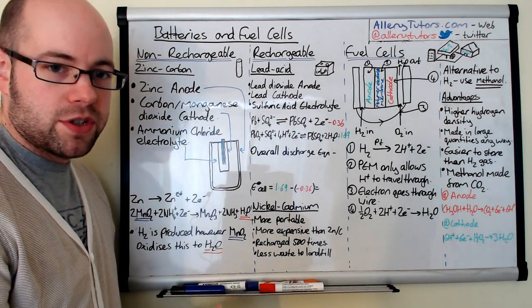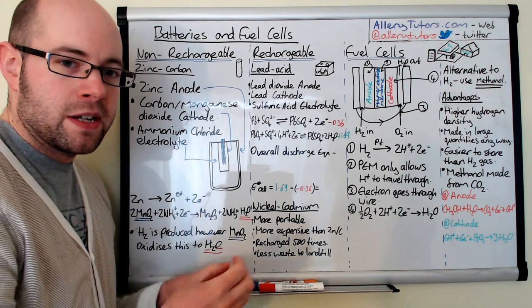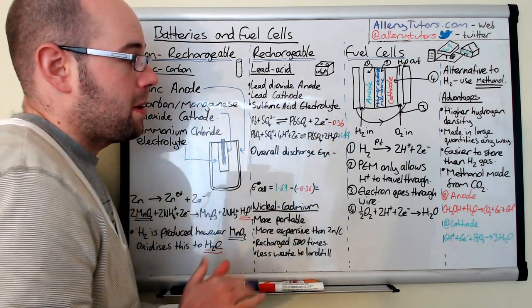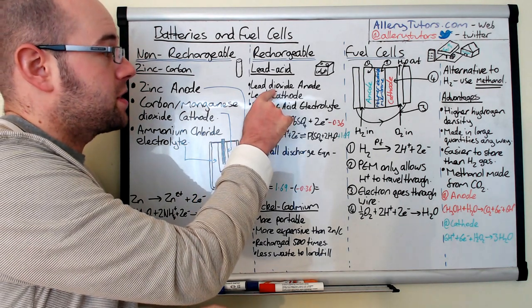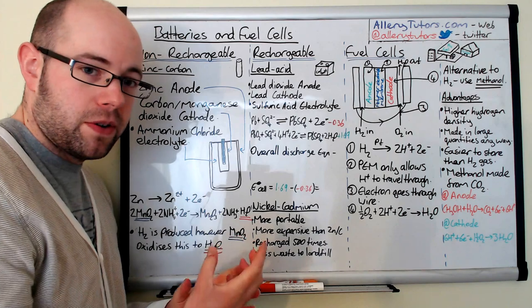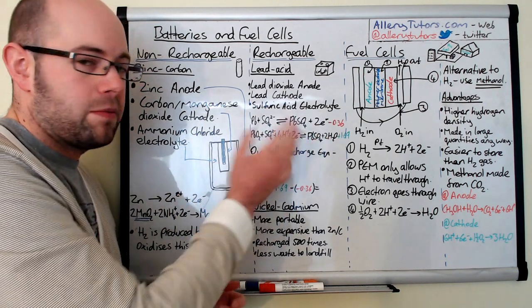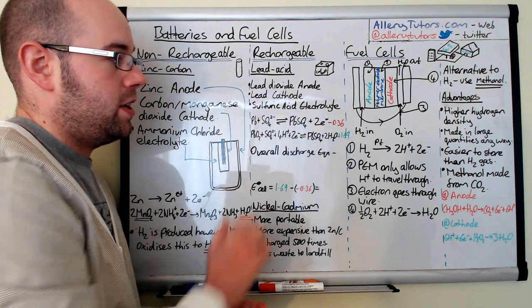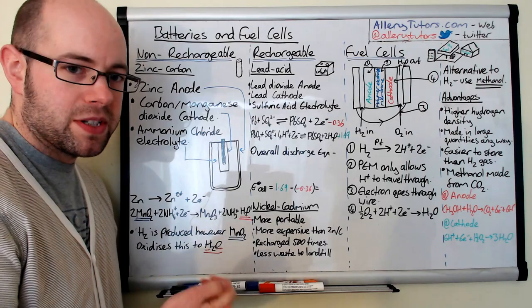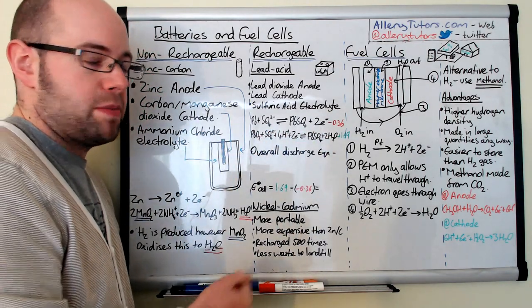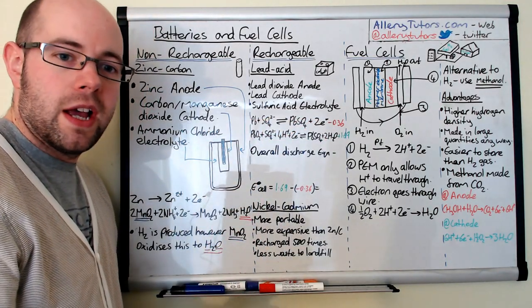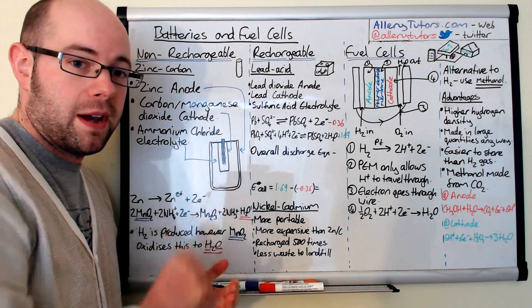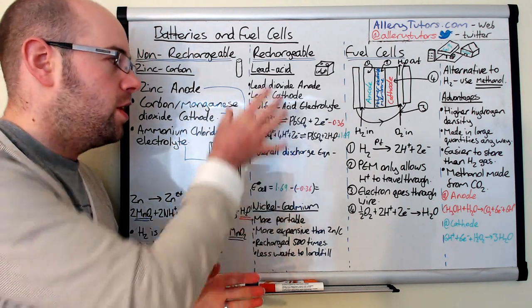The two half equations for the lead acid battery are: lead reacting with sulfate ions from the sulfuric acid electrolyte to form lead sulfate and two electrons, with an E0 of −0.36 V. On the other side, lead dioxide at the anode — also in contact with sulfuric acid providing H⁺ ions — reacts with electrons to form lead sulfate and two molecules of water, with an E0 of +1.69 V. The positive E0 indicates this half reaction is reducing, and the negative E0 indicates the other is oxidising. I've already flipped the oxidation equation around to show what's actually happening.